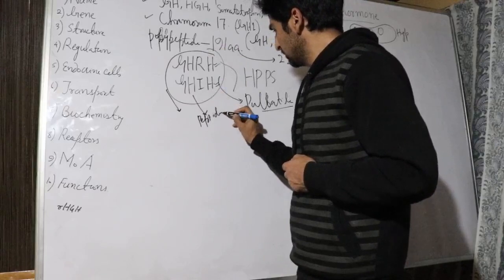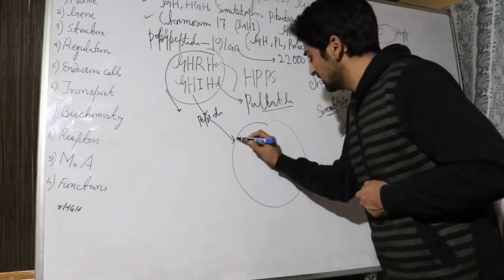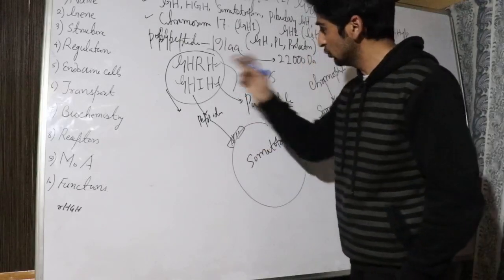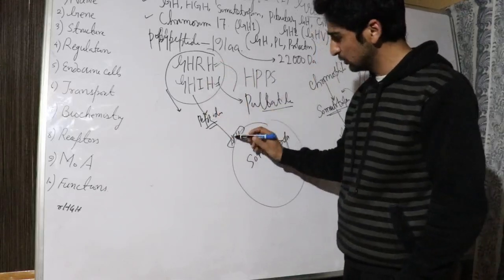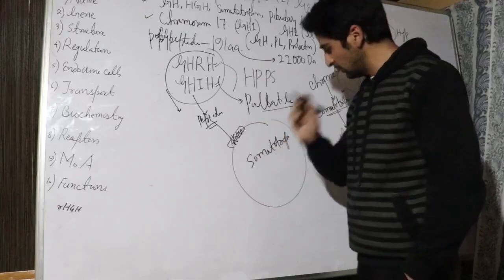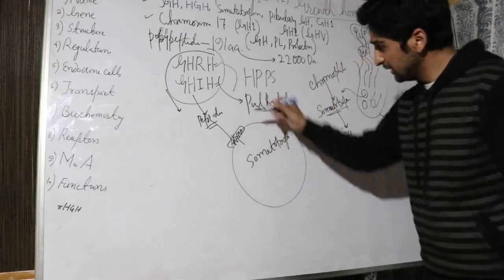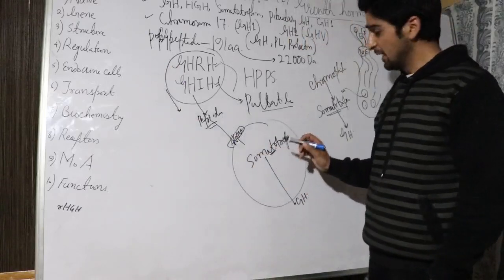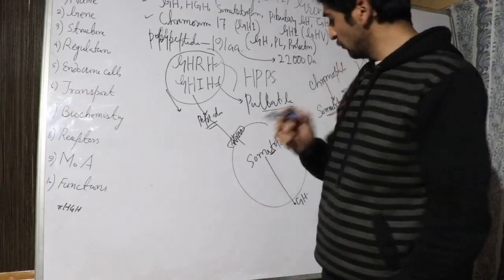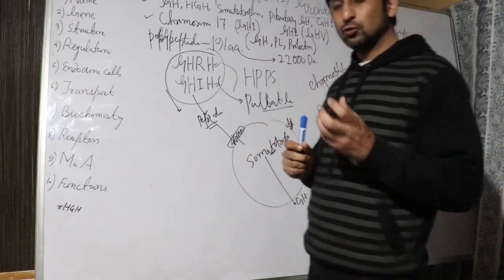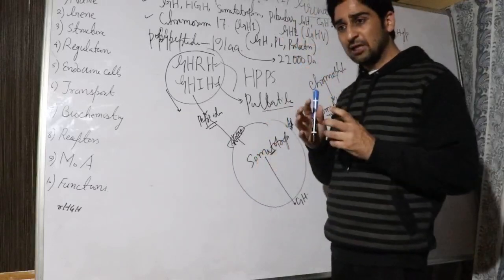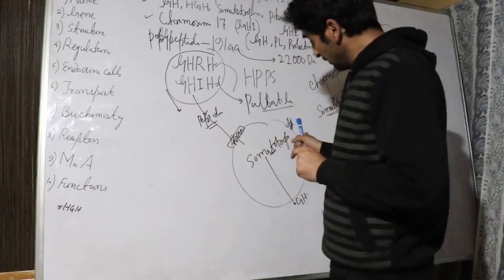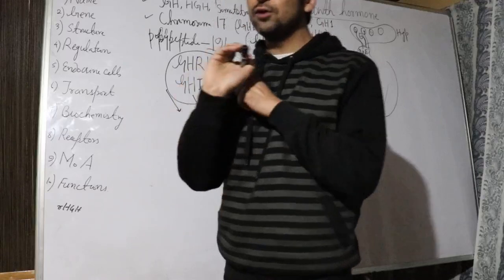Since growth hormone releasing hormone and growth hormone inhibiting hormone are both peptides, their receptors are on the surface of the target cells — the somatotropes — typically G-protein coupled receptors. They stimulate or inhibit somatotropes to release growth hormone. The endocrine cells that secrete growth hormone are the somatotropes, also called acidophils. Somatotropes and lactotropes are both acidophils and constitute the maximum percentage of cells in the pituitary gland, which is why pituitary tumors are typically acidophilic.